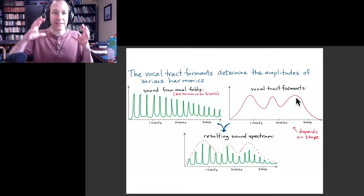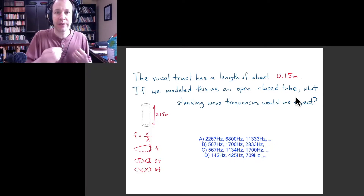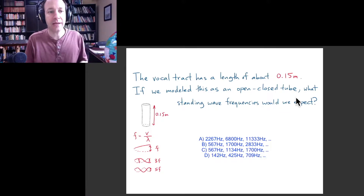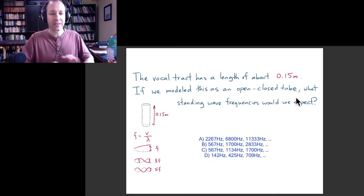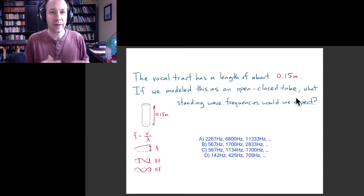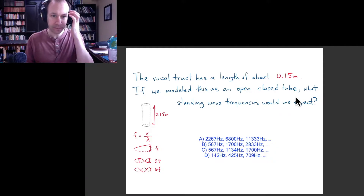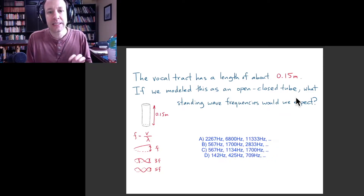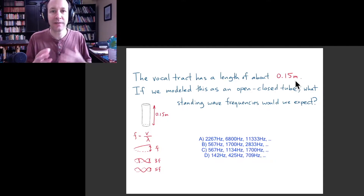I want to start by thinking about a very simple model of the vocal tract cavity and see if we can predict what frequencies are going to be emphasized by that cavity. We're going to model the vocal tract as just a tube that's closed at one end — where the vocal folds are — and open at the other end where your mouth is. The length of the tube is 0.15 meters, or 15 centimeters, and the speed of sound is about 340 meters per second.